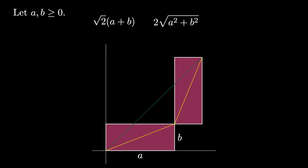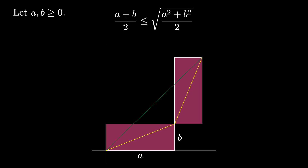But now we see that the shortest distance between two points in the plane is along the line connecting them. This means that the square root of 2 times the quantity a plus b is less than or equal to 2 times the square root of a squared plus b squared. When we divide both sides of this inequality by 2 times the square root of 2, we obtain a plus b over 2 is less than or equal to the square root of the quantity a squared plus b squared all divided by 2.